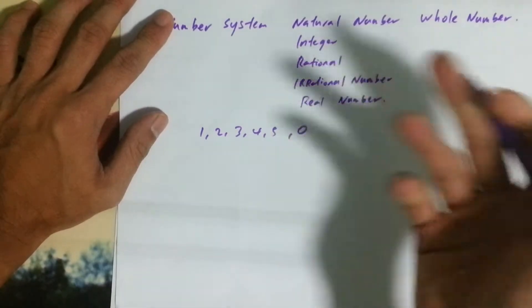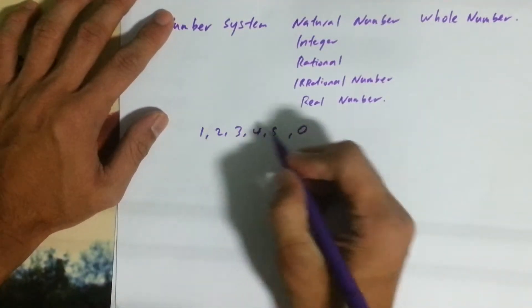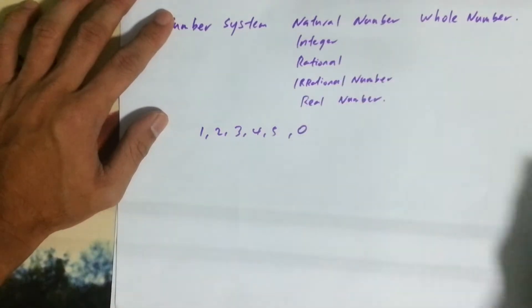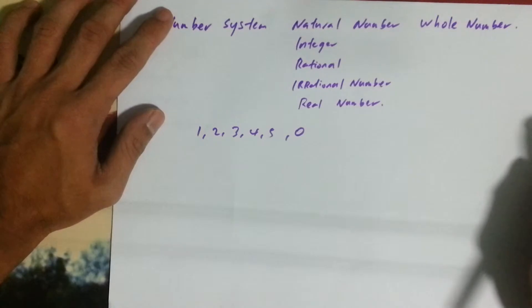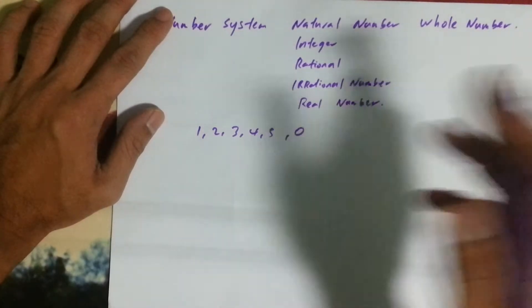Zero is included inside. Okay, next we go on to integers. What is integer? Integer is actually a number that is from positive to negative.